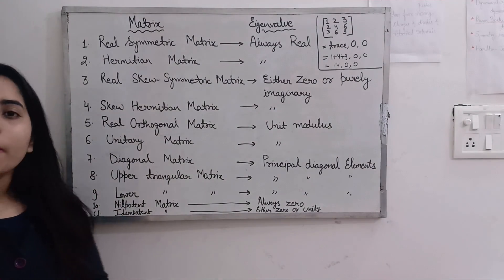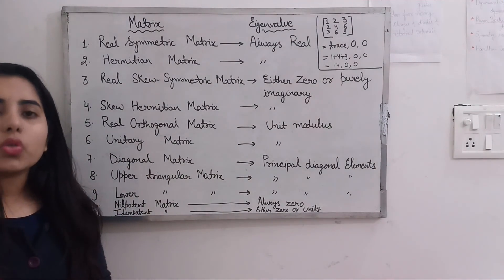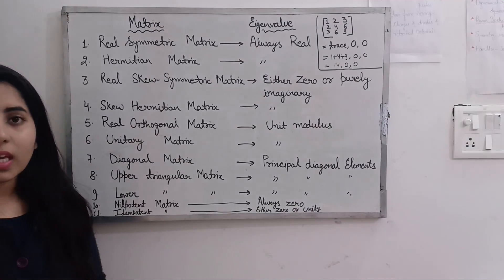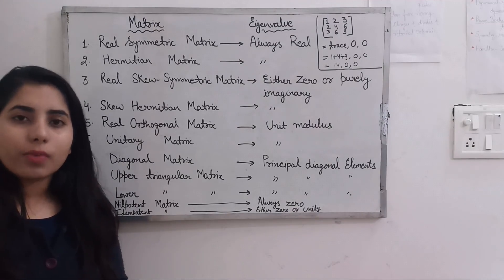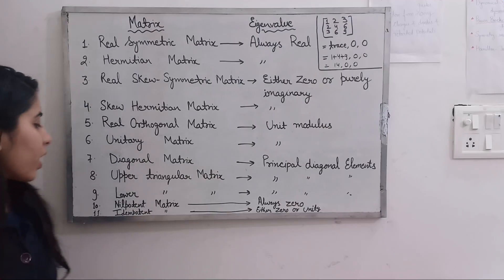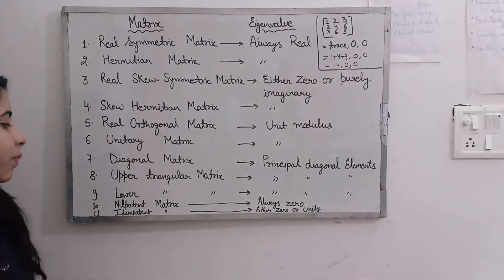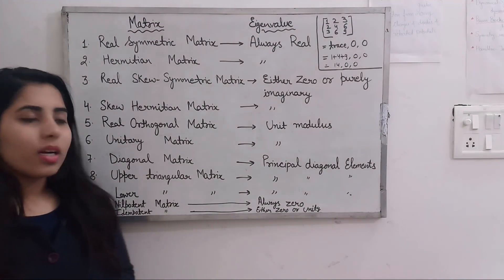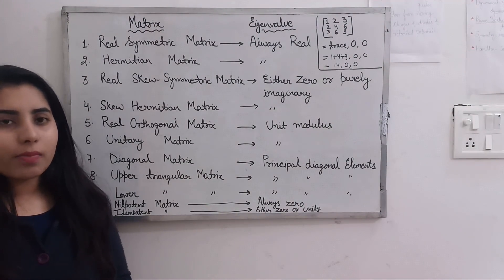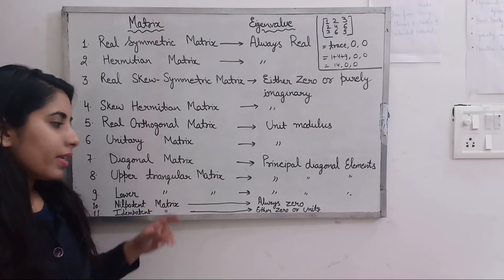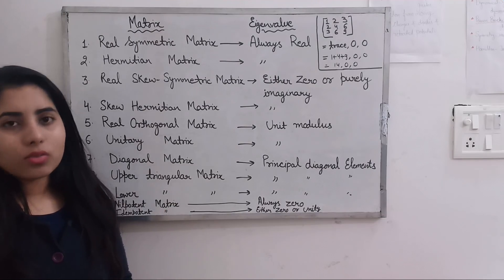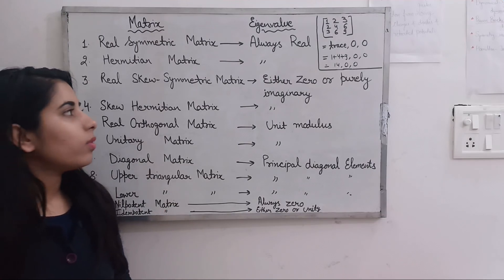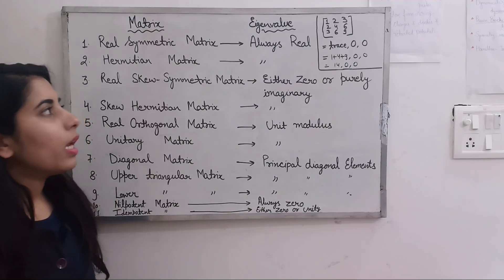Next is the nilpotent matrix. Its corresponding eigenvalues are always zero. After that, for an idempotent matrix, the corresponding eigenvalues are either zero or unity — that is, 0 or 1.